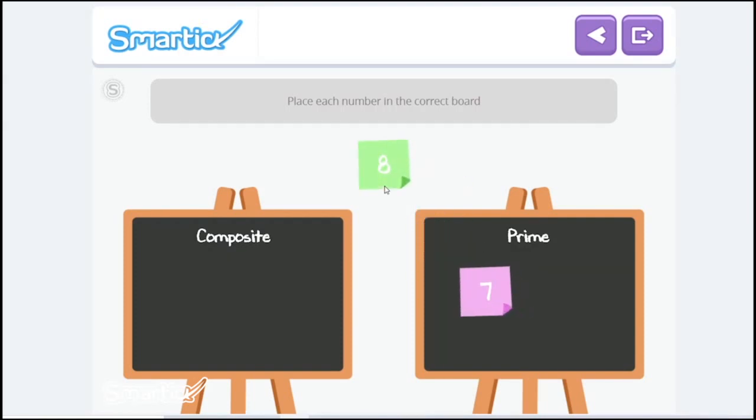8. We did this one before, so we know that this one has more than one factorization. It's 1 and 8, and 2 and 4. So it's a composite number.